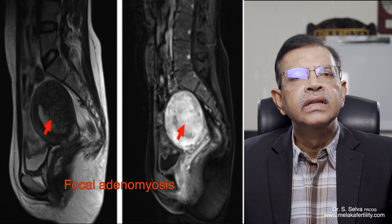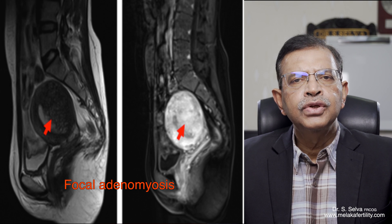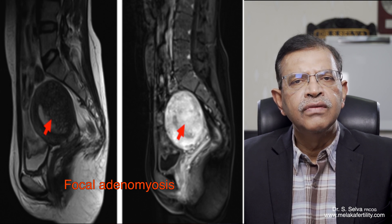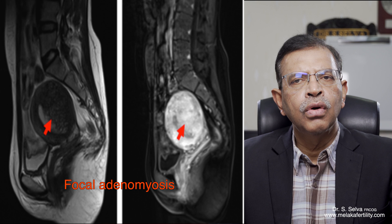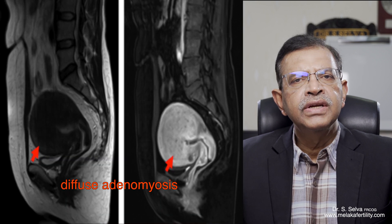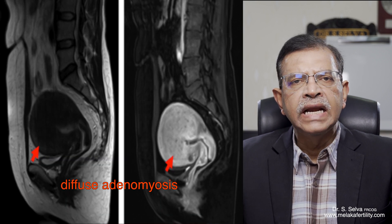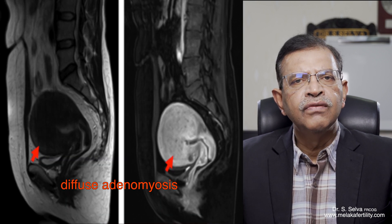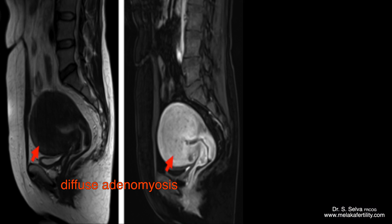MRI is best for diagnosing adenomyosis. This MRI shows a focal adenomyosis involving only the posterior wall of the uterus. This MRI shows diffuse adenomyosis involving most of the uterus.